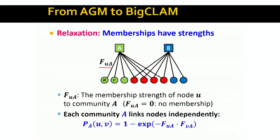The question is: how do links in the network arise from this model? Each community A links nodes independently. The probability that two nodes are linked due to a given community — meaning them being a member of that community — is simply one minus the exponential of minus the product of the membership strengths of the two nodes in that given community.